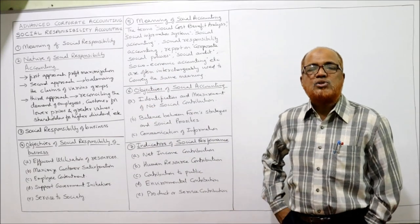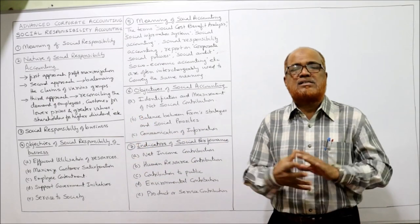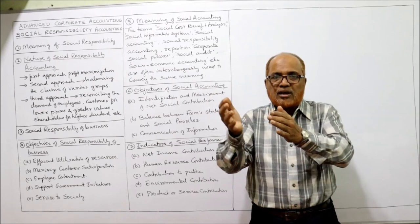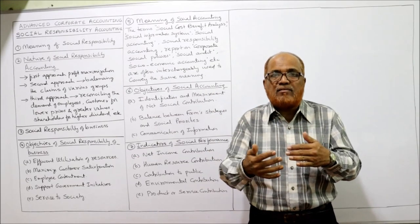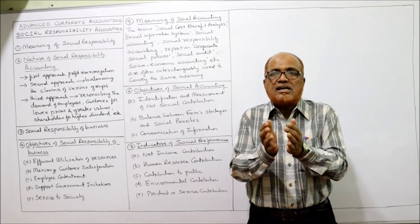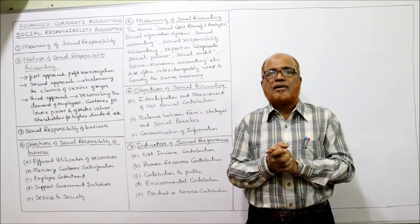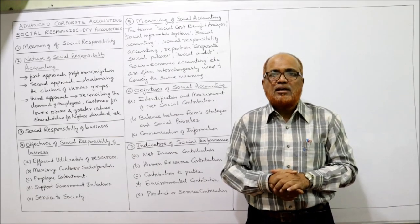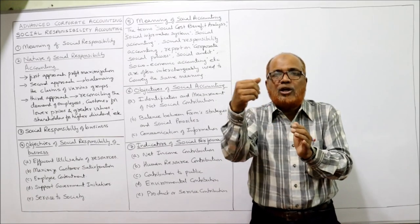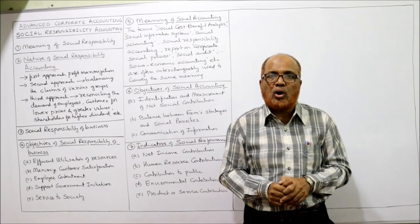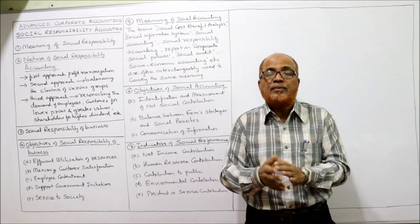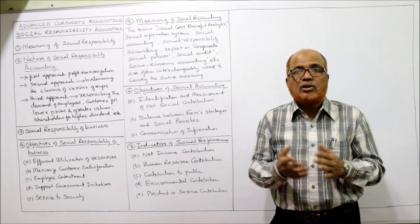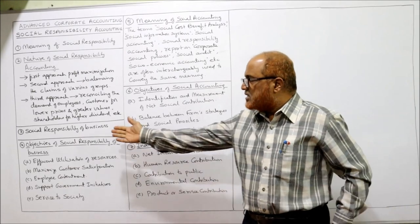Now, social responsibility of business: a business organization consumes the resources of the society and provides the goods and services needed by the society. There is a direct relationship between society and the business organization. If the business thinks only from an income point of view, ignoring the society, it will not run long. If it wants to survive for a long period, it must consider its responsibility towards society.